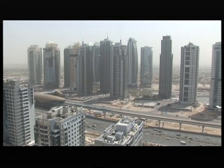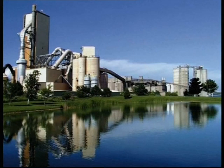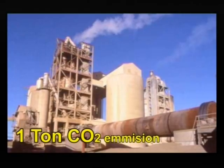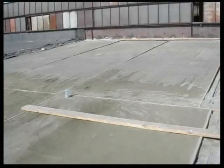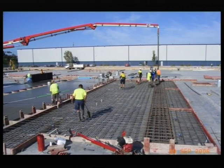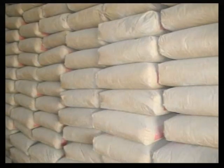The cement producing companies create a lot of pollution. For every tonne of cement produced, nearly one tonne of carbon dioxide is emitted into the air. By using fly ash in concrete, the user saves cement and consequently helps to reduce cement production. This automatically helps to reduce pollution caused by cement industries.